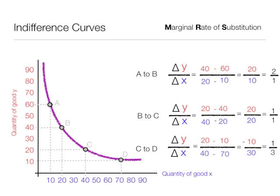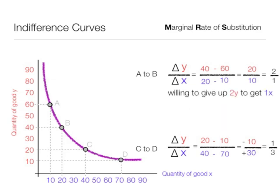Moving from point A to B, the consumer is willing to give up 2y to get 1x. But moving from C to D, the consumer is willing to give up 1y to get 3x. So as the consumer moves down the indifference curve, y is getting scarce.